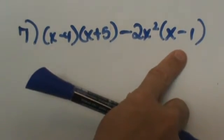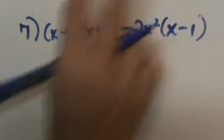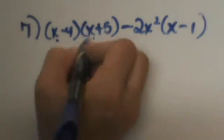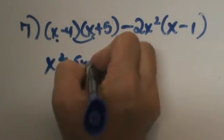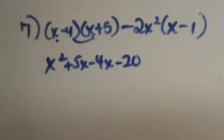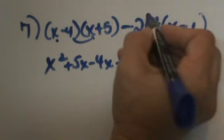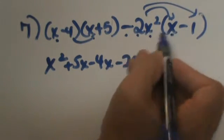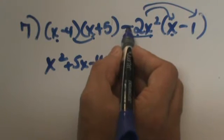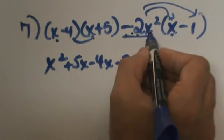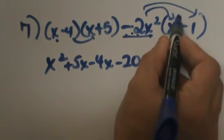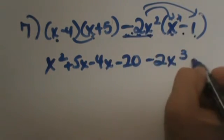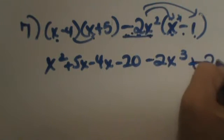We'll treat this as two separate problems. First, FOIL the binomials: x times x is x squared; outer is positive 5x; inner is negative 4x; and last is negative 20. That is the first part. Now distribute negative 2x squared into x minus 1 — make sure you bring the negative with it. Negative 2x squared times x: add the exponent of 1, giving negative 2x cubed. Then negative 2x squared times negative 1 — a negative times a negative is a positive — gives positive 2x squared.